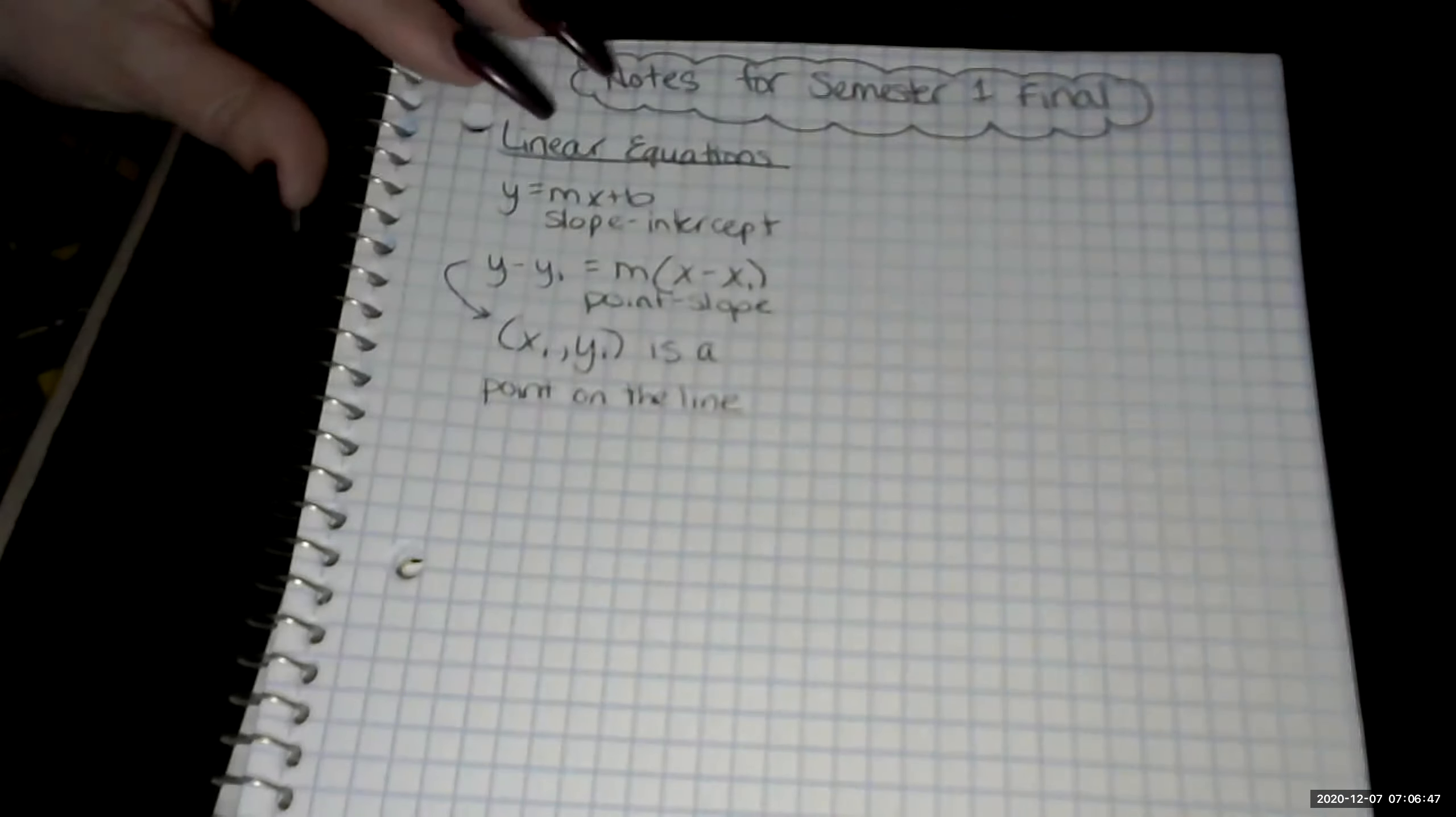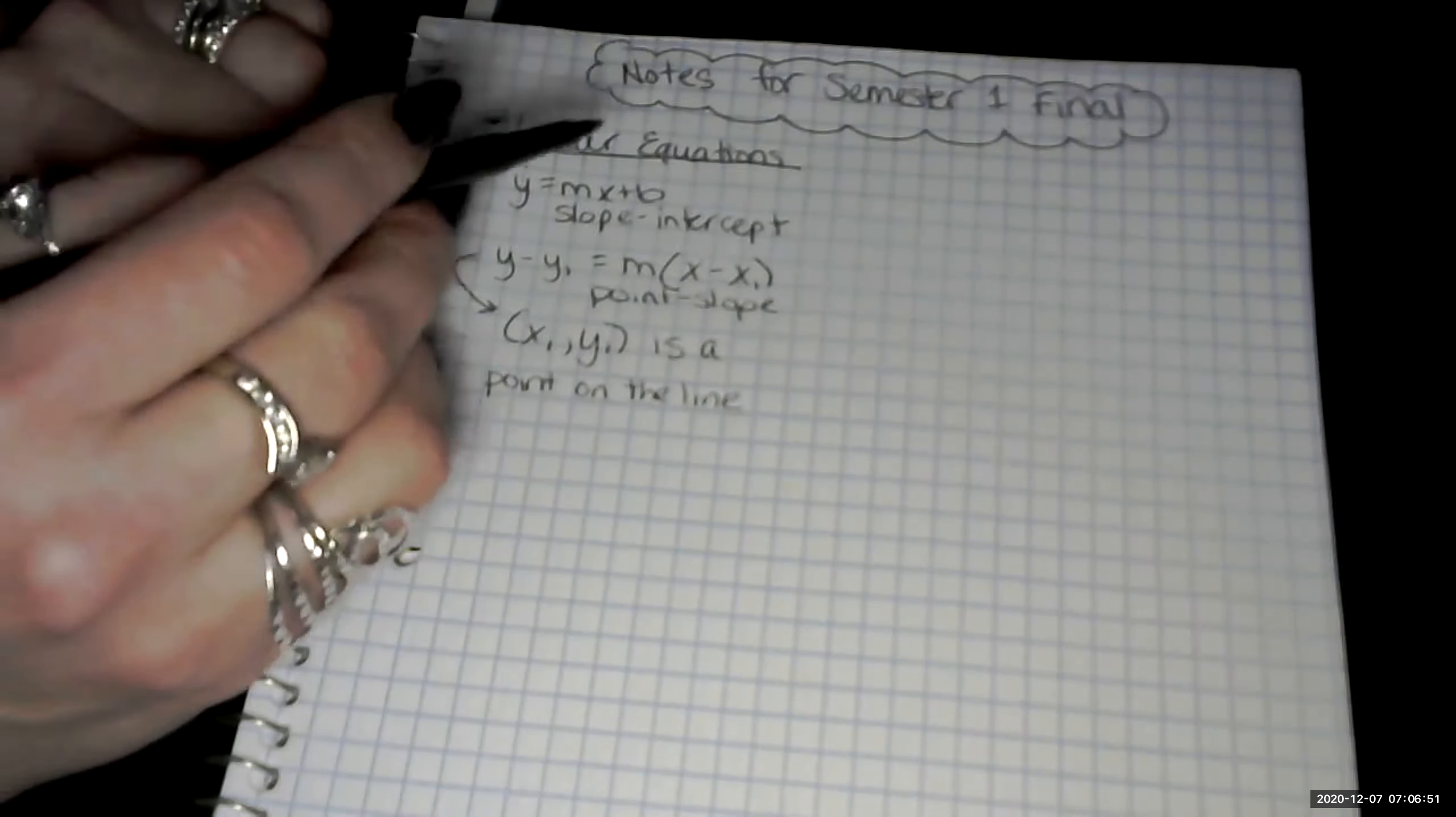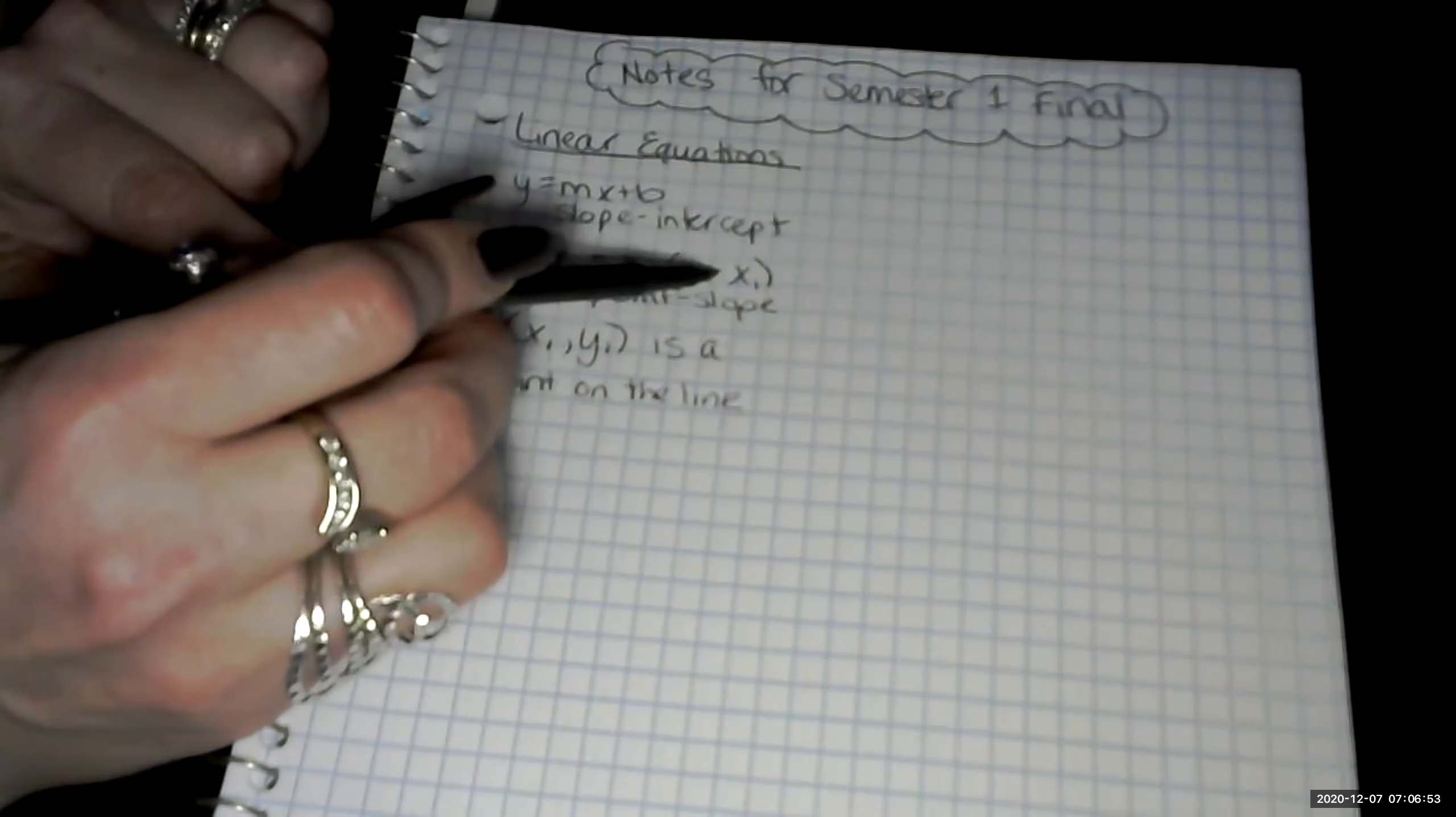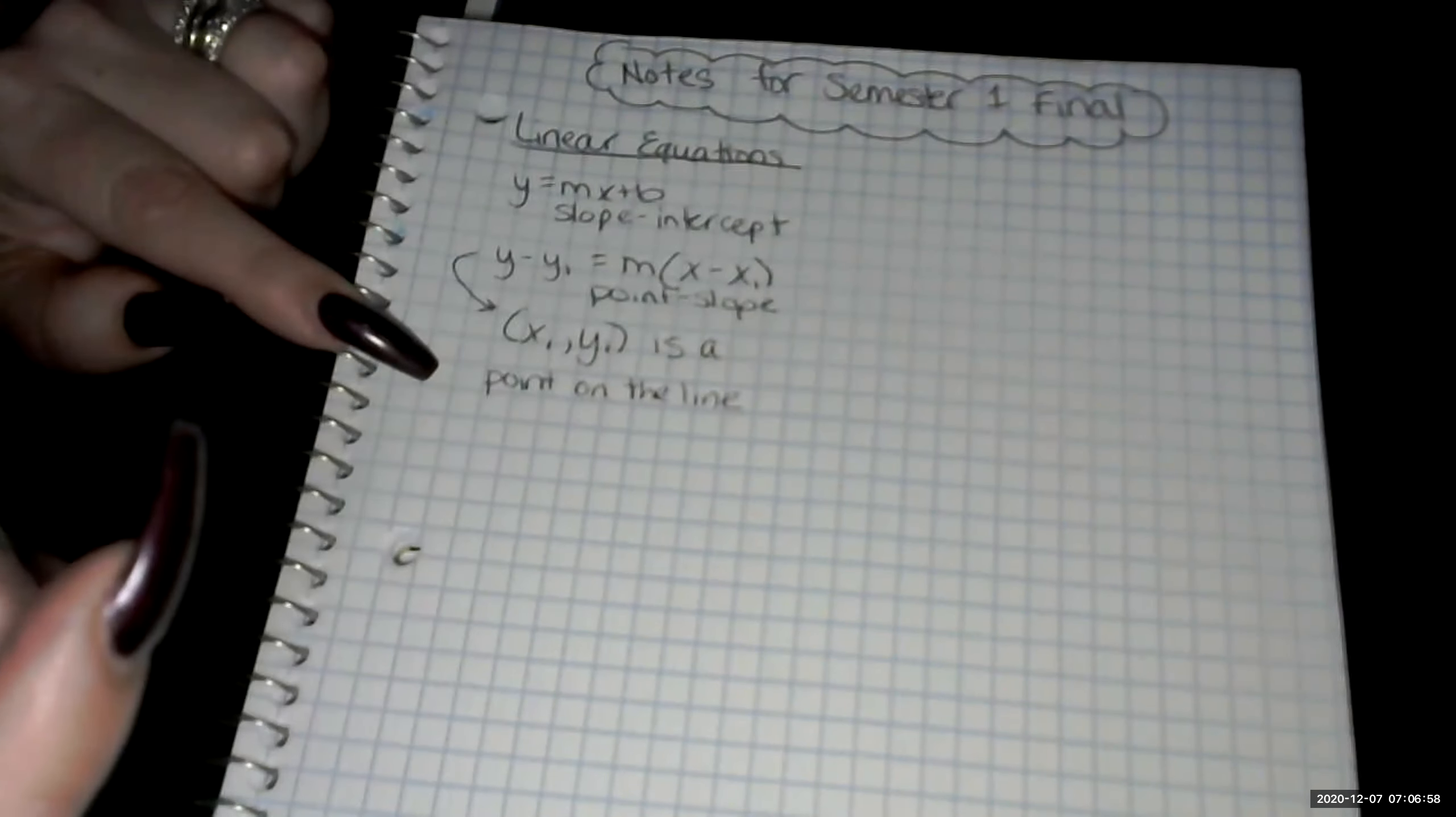And then you guys know that slope is m. But that's how we write that. Remember, take special note. The formula calls for subtraction because we're finding the difference between the points.